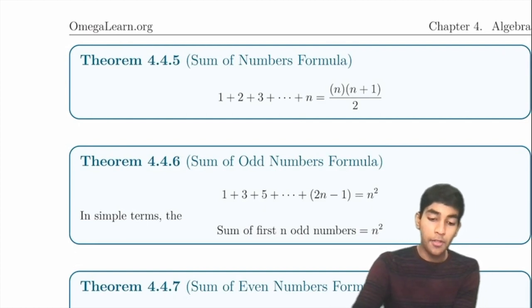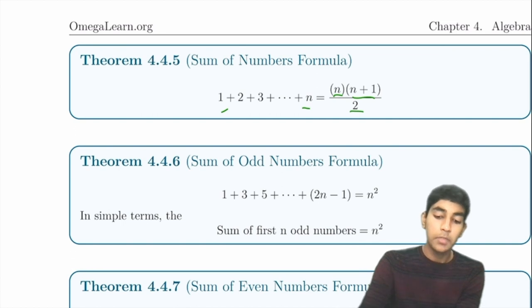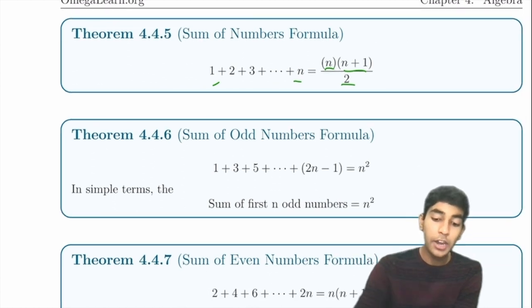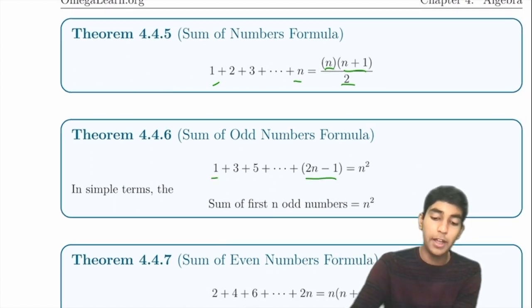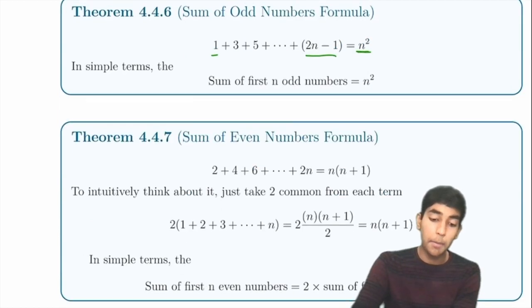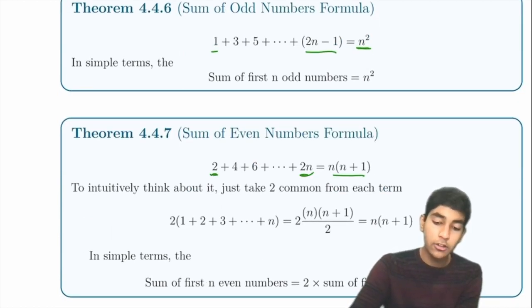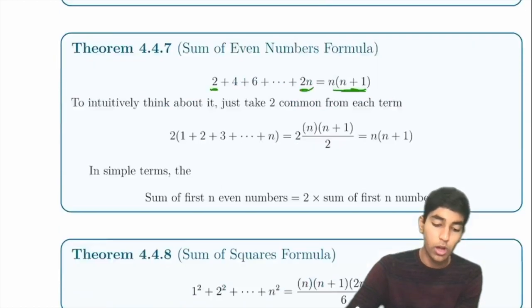Sum formulas: sum of 1 to n is n(n+1)/2. Sum of odd numbers 1 to (2n−1) is n². Sum of even numbers 2 to 2n is n(n+1).